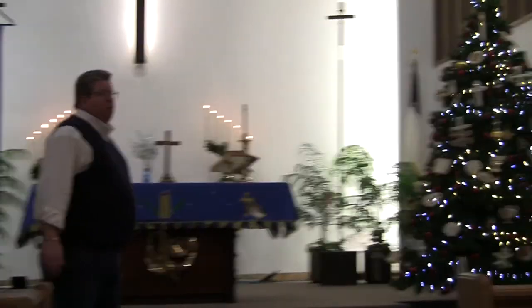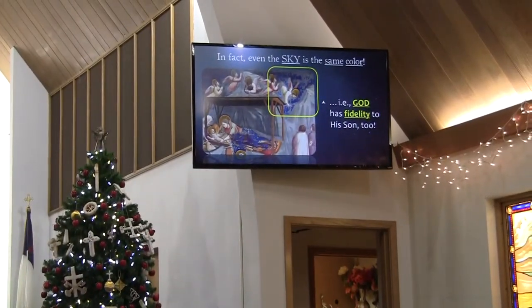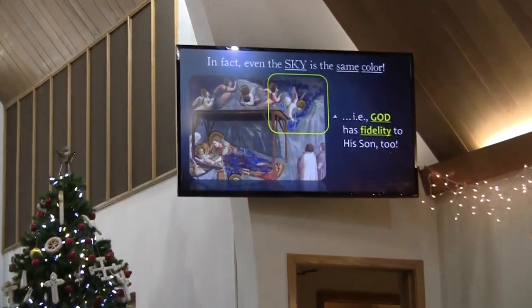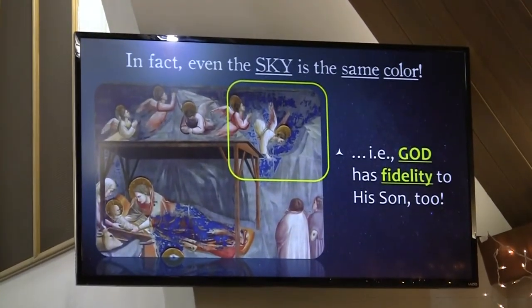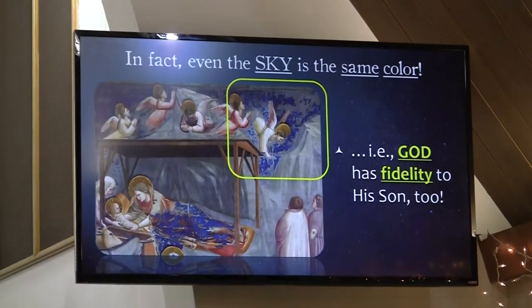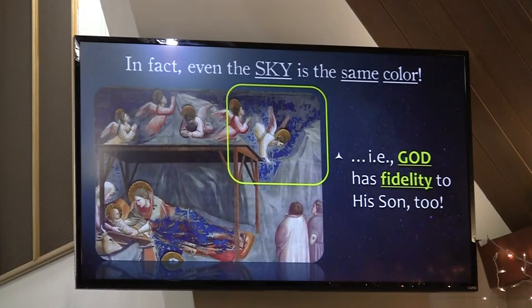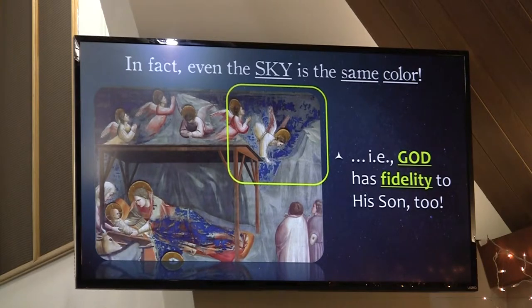Notice too what else is blue in this picture — the sky. It's not black, as in night. It's painted the same color blue as Mary. Dare we say that is a way for Giotto to tell us that inasmuch as Mary has fidelity to her son, God has fidelity to his son as well.